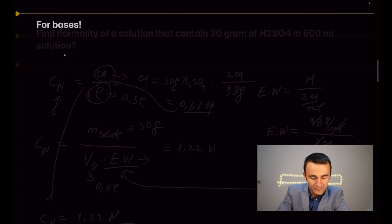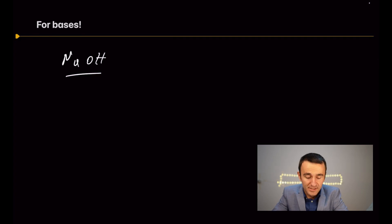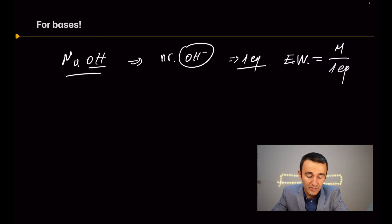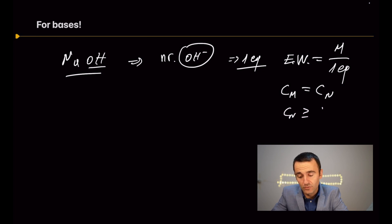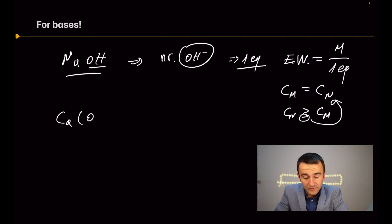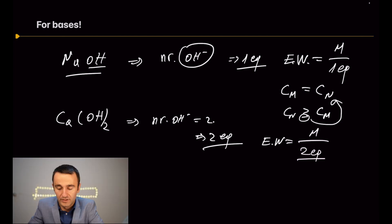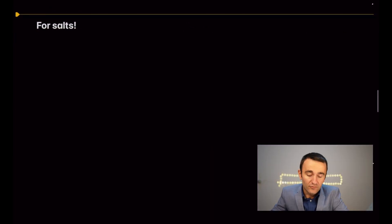The same approach applies for bases. For sodium hydroxide, the equivalent is related to the number of hydroxide ions — in this case one — so it contains one equivalent per mole. The molar concentration equals the normal concentration in this case. For calcium hydroxide, which contains two hydroxide ions, the number of equivalents is two, and the equivalent weight is the molar mass divided by two equivalents per mole.